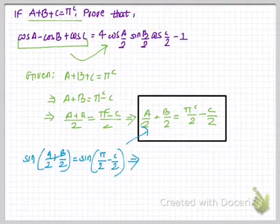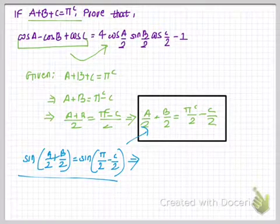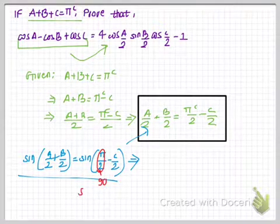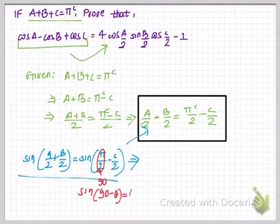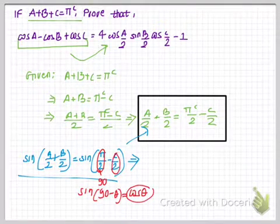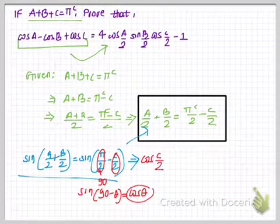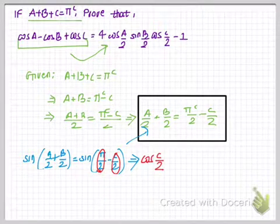Now let us operate on this equation first by sine. We have sin((A + B)/2) = sin(π/2 − C/2). We know that π/2 is 90 degrees and sin(90° − θ) = cos θ. So in place of θ we have C/2, meaning sin((A + B)/2) = cos(C/2).